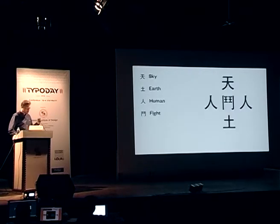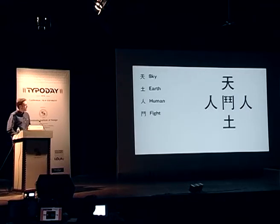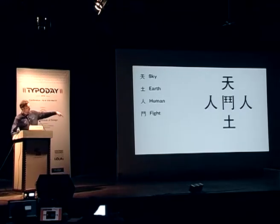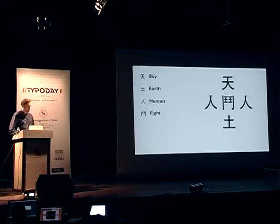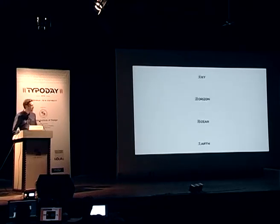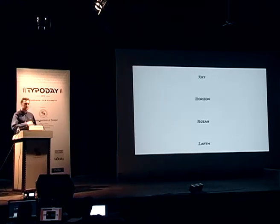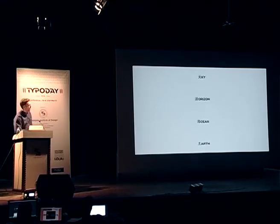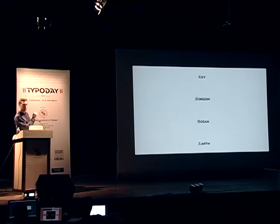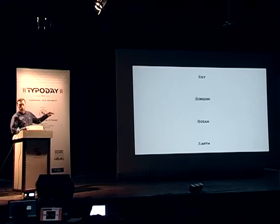I ended up doing this one, which I think is relevant for pretty much every culture. It basically says: between heaven and earth, people are fighting. Maybe not that uplifting, but I think it should be representable. The last experiment I did was basically just taking — this is a landscape painting, as everyone can see. I basically just took the first character of each English word and replaced it with the character for the same word in Chinese. So it says: sky, horizon, ocean, earth.